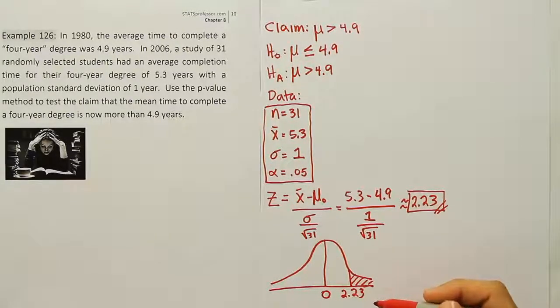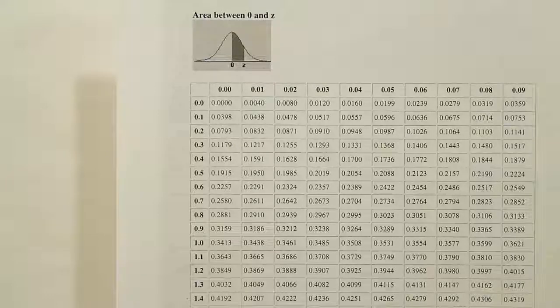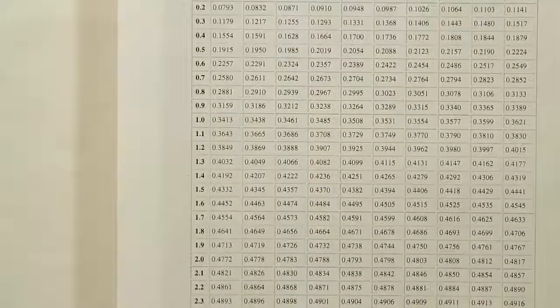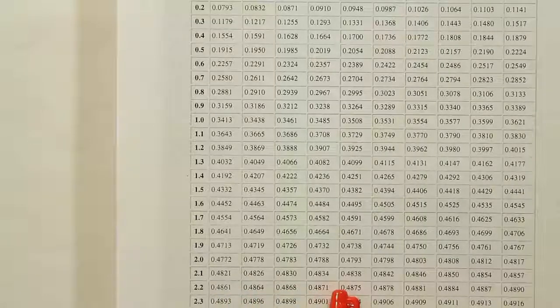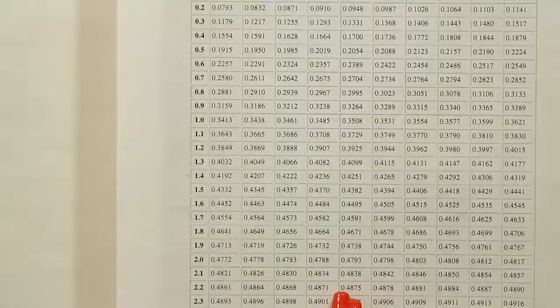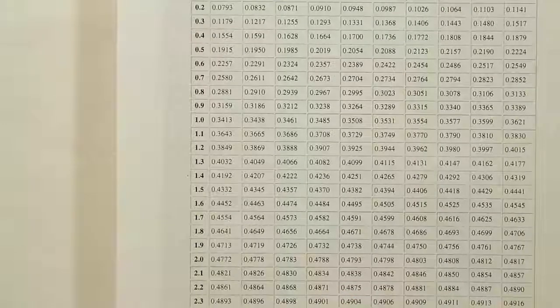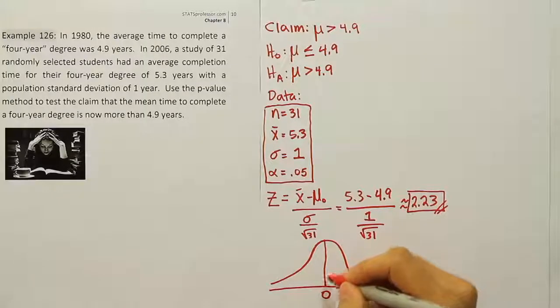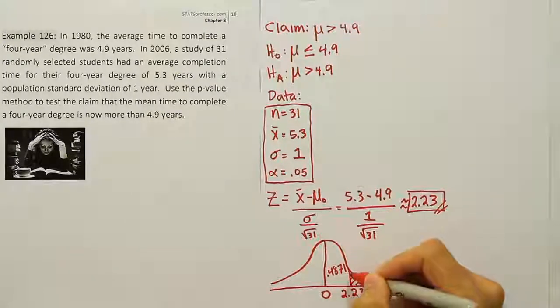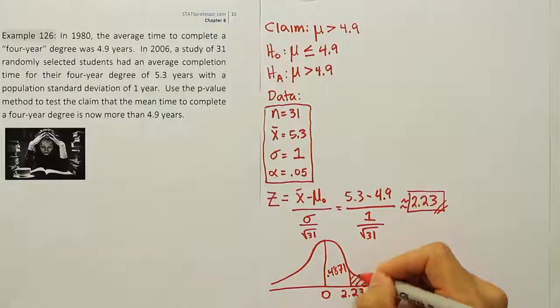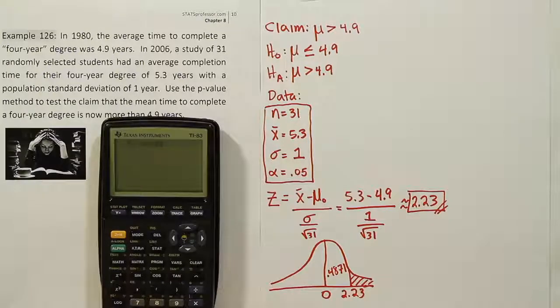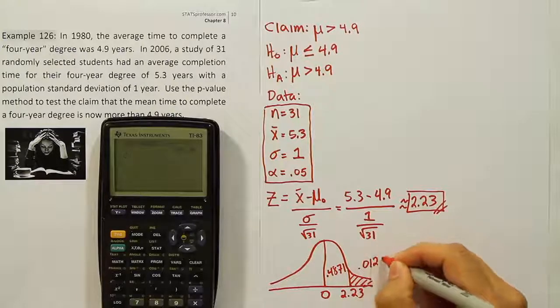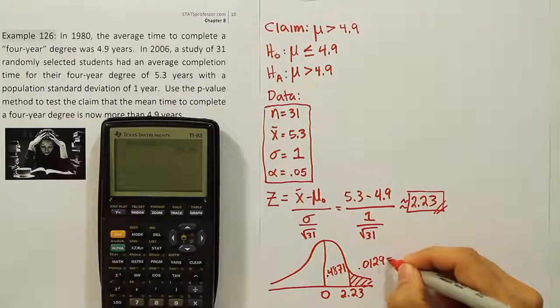Let's look up 2.23 on our z-chart. We move down to the 2.2 row, then over to the fourth position, which is 2.23. We find 0.4871. That's the area from the line to the center. We need the leftover amount, so we do 0.5 minus 0.4871, which gives 0.0129. So we have 1.29% in the tail, and that's our p-value.